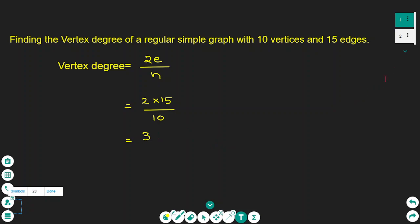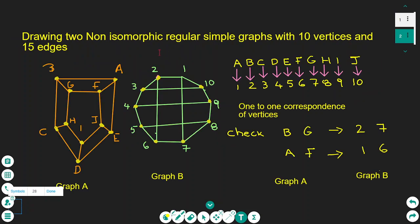Now I'm going to show how to draw two non-isomorphic regular simple graphs with 10 vertices and 15 edges, as you can see on the screen. This is graph A and graph B. Graph A has 10 vertices and 15 edges, and graph B also has 10 vertices and 15 edges, but they look different. They are regular simple graphs but they are not isomorphic.